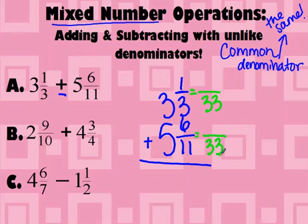So now we have to go through this process to see how we got from 3 to 33. I did 3 times 11 to get to 33, and whatever you do to the bottom, you do to the top. So times 11 on the bottom, 1 times 11 is 11. Same thing down here. How did I get from 11 to 33? 11 times 3 gave me 33. Whatever I do to the bottom, I do to the top. So 6 times 3 is 18.